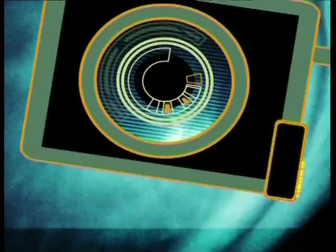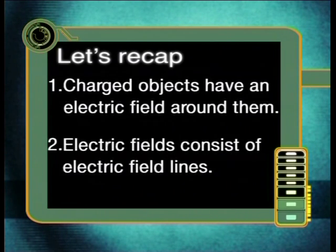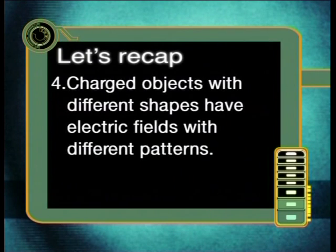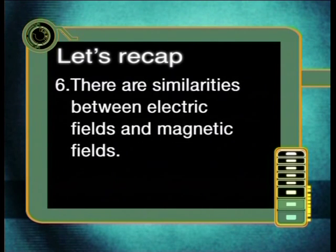Let's have a quick recap of what we have learnt in today's lesson. Charged objects have an electric field around them. Electric fields consist of electric field lines, and the direction of an electric field line is the path which would be taken by a freely moving positively charged particle in the electric field. Charged objects with different shapes have electric fields with different patterns. Pairs of charged objects with different charges have electric fields with different patterns between them. There are similarities between electric fields and magnetic fields.